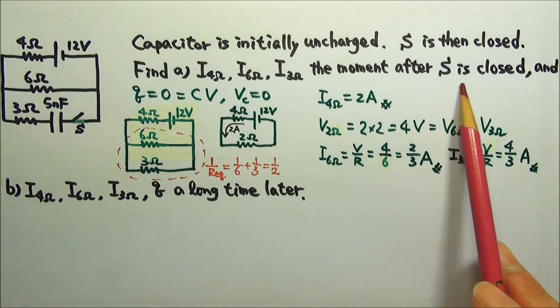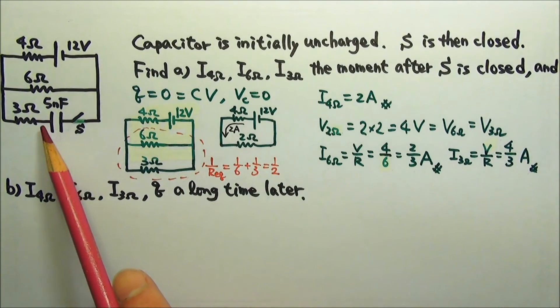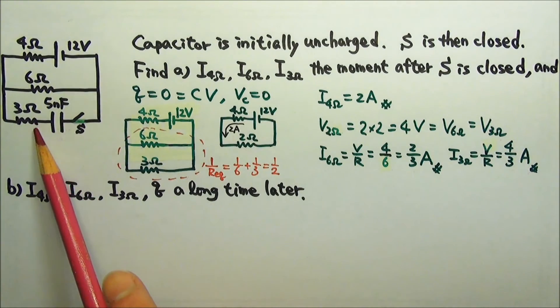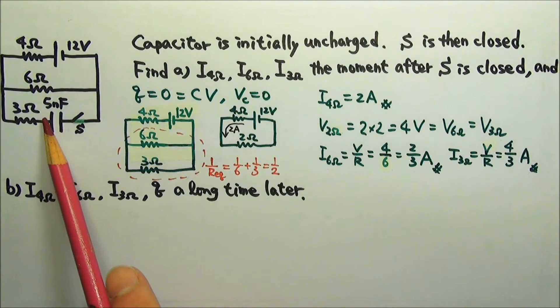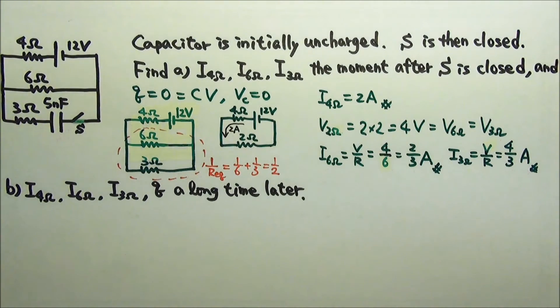A long time after the switch is closed, the capacitor becomes fully charged. So no more charges are coming onto the plates. This means there is no current in this segment. Therefore we can cut the wires here and there and it will not make any difference. So the 3 ohms does not get any current.